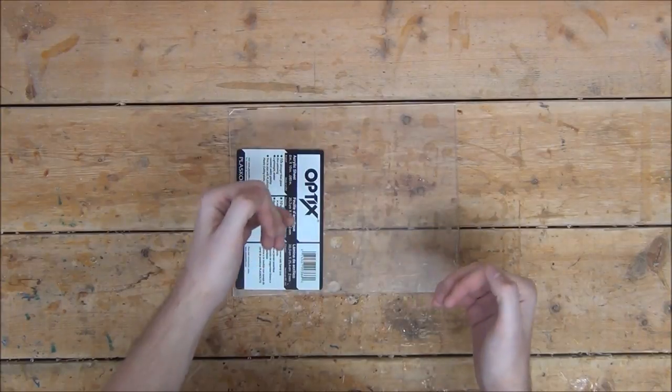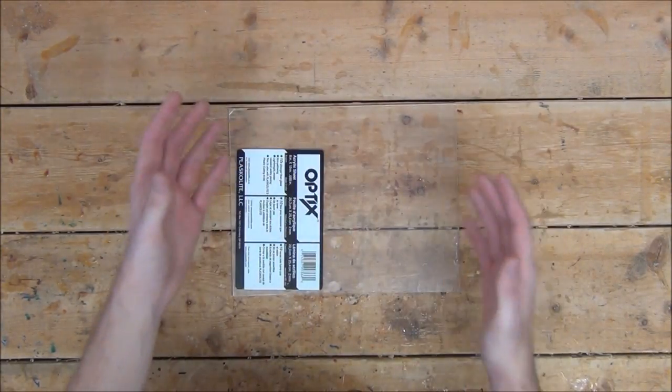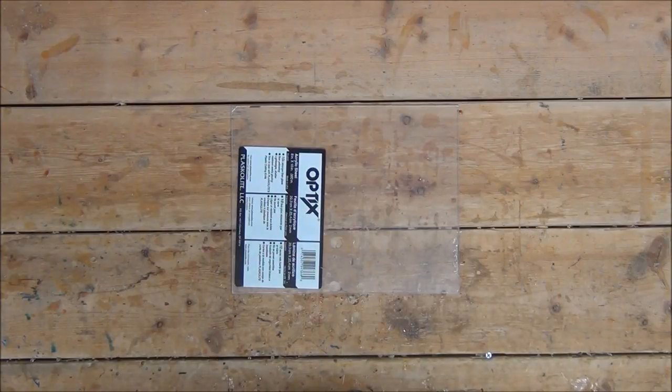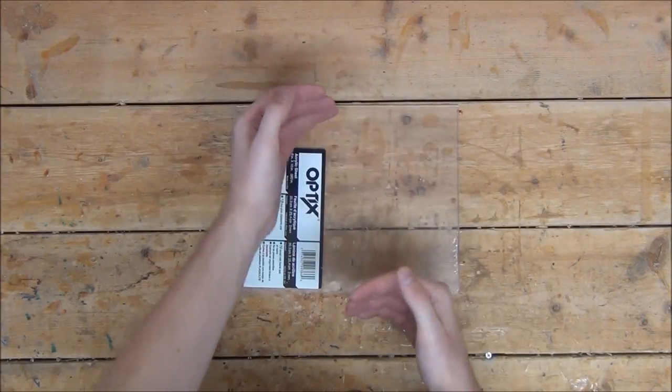I'm going to be using 3 quarter inch pine plywood to construct the whole frame, but of course you can use whatever wood you like. I just like how the plywood looks once it's stained. So the first thing I'm going to do is take my plywood and cut out two 2.5 by 8 inch long pieces.